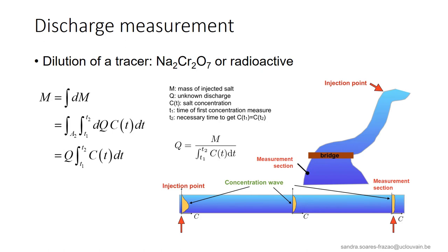Another method that provides a direct measurement of the discharge is the dilution of a tracer. A given mass of tracer with a known concentration is injected at the injection point. And the concentration is measured further downstream, at the measurement section, located far enough to ensure a more or less constant distribution of the tracer by mixing. But not too far to avoid loss of tracer by dilution. Measuring the time it takes for the whole tracer to pass through the measurement section allows to deduce the discharge with the equations indicated here.